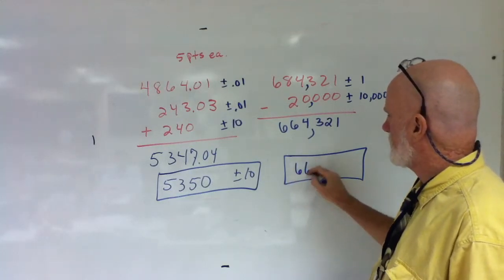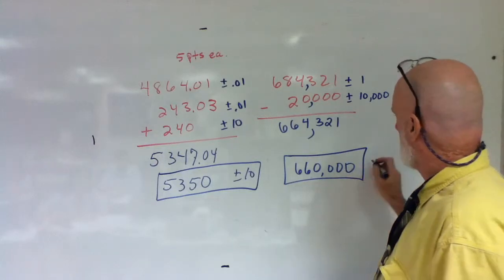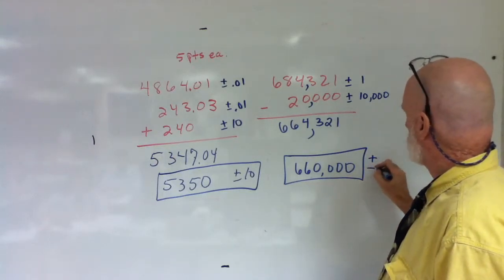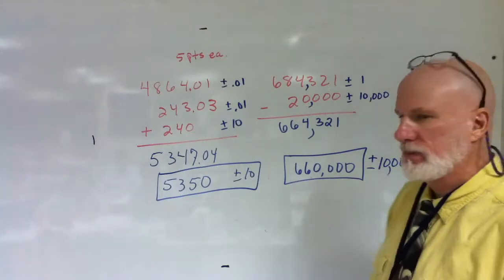So it's going to be six hundred and sixty thousand. Six hundred and sixty thousand. Yep, correct. And that's going to be plus or minus ten thousand.